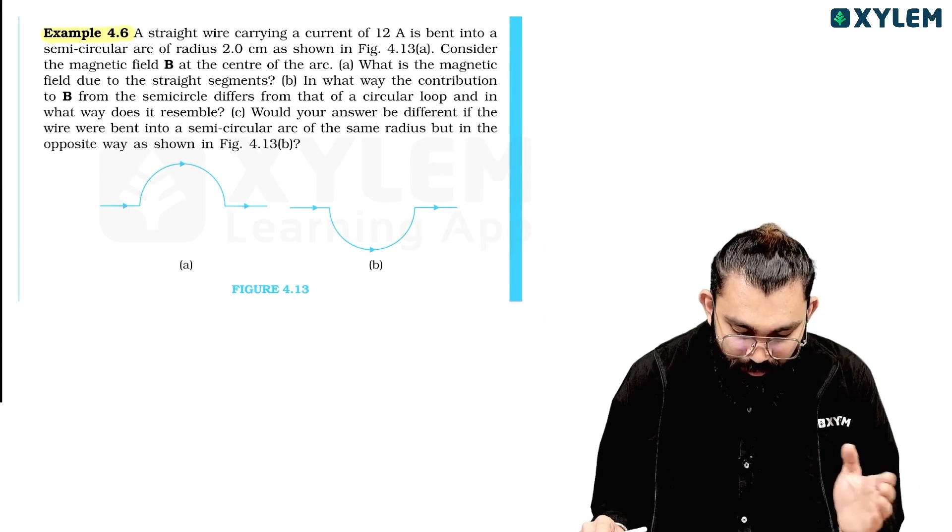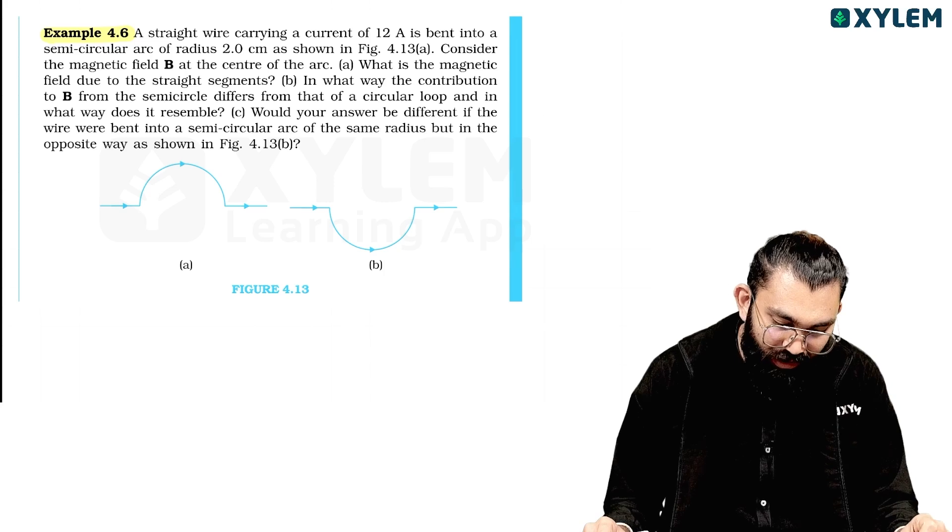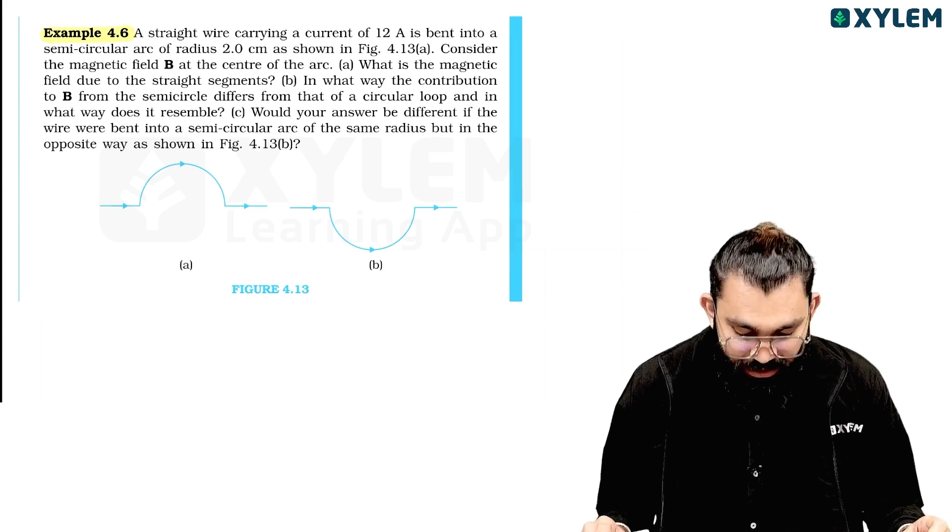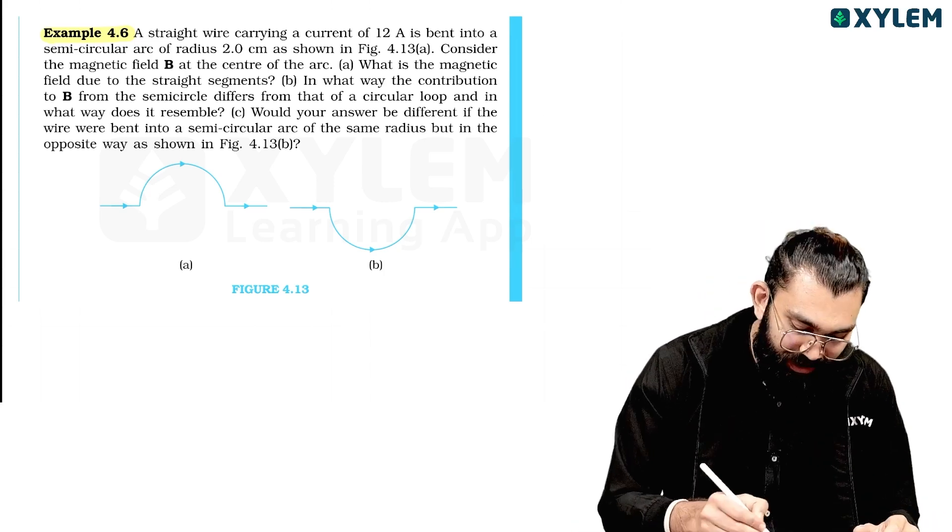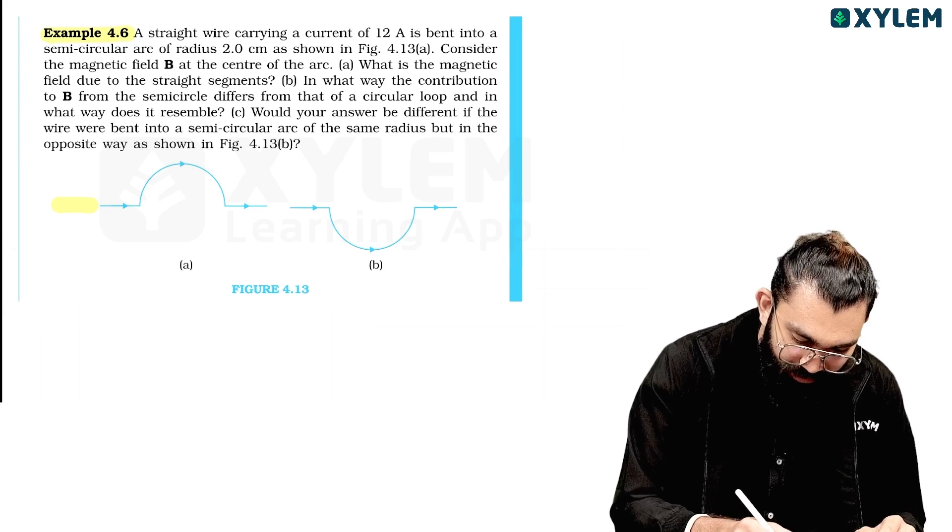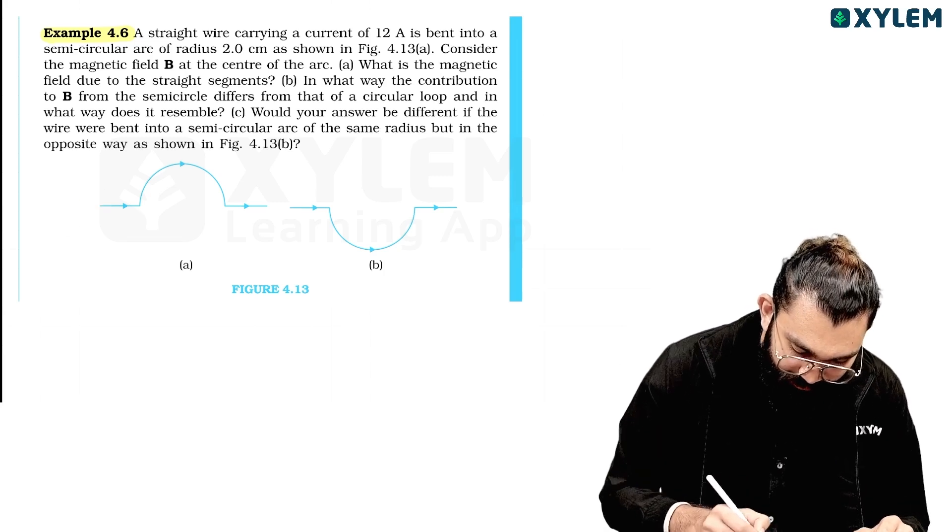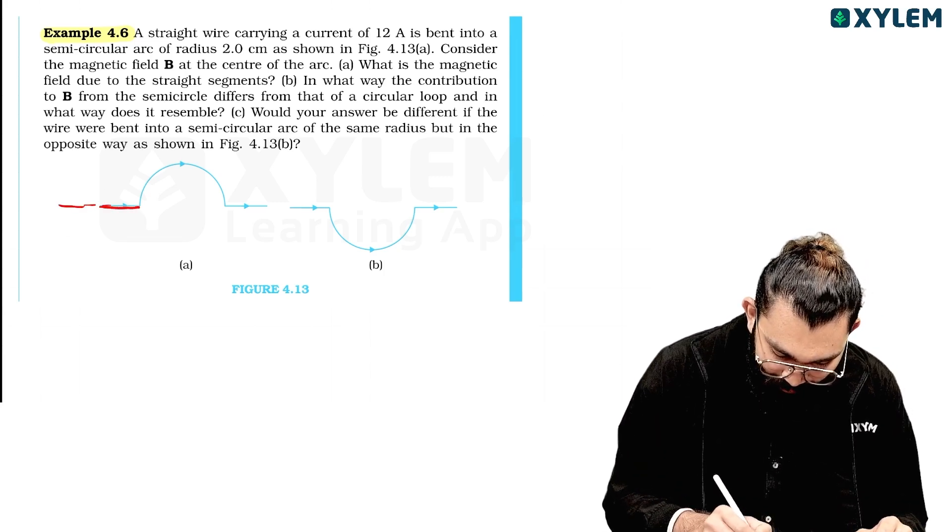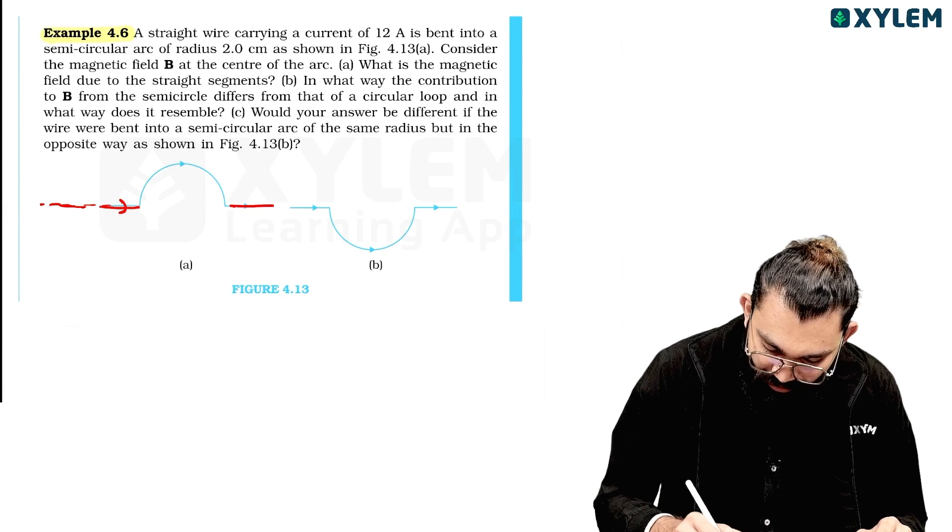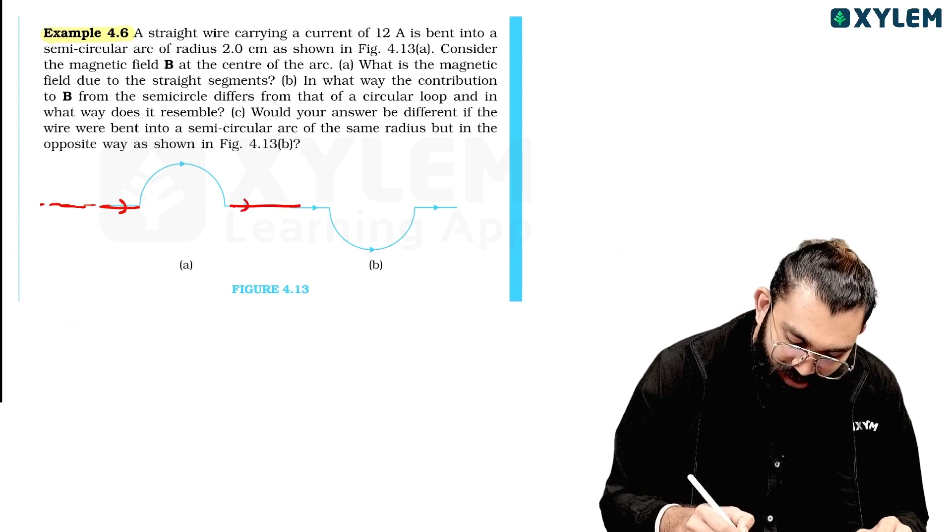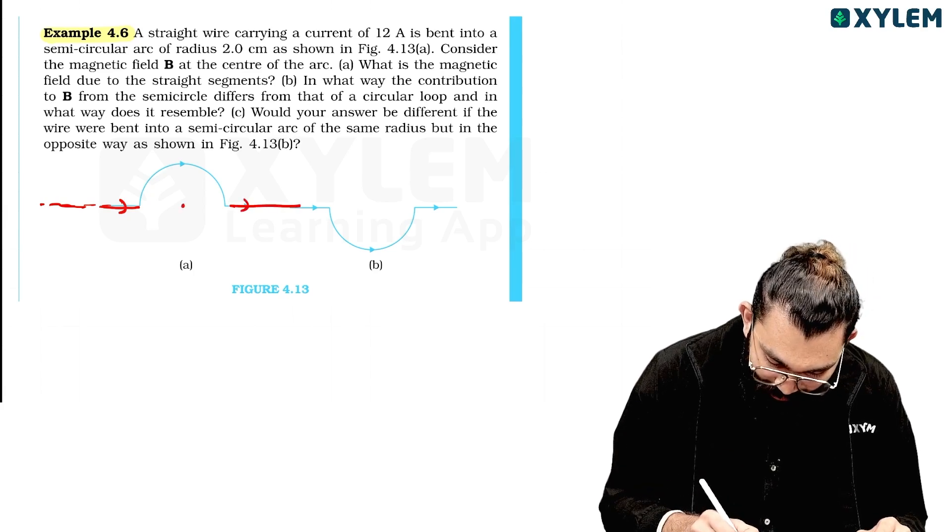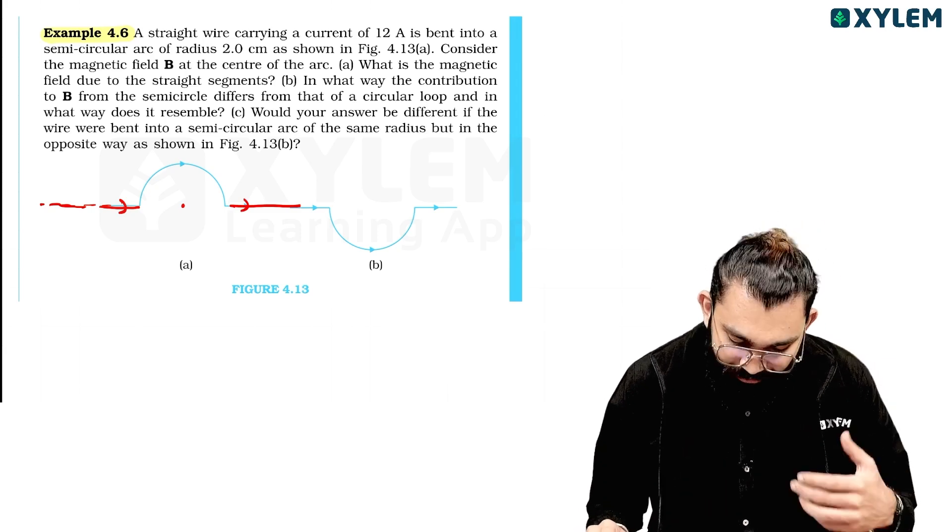What is the magnetic field? First part A: what is the magnetic field due to the straight segment? In the same diagram, there are two straight segments. The straight segments and the semi-circular loop in the center—the magnetic field is nothing.